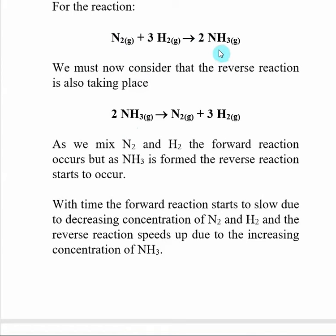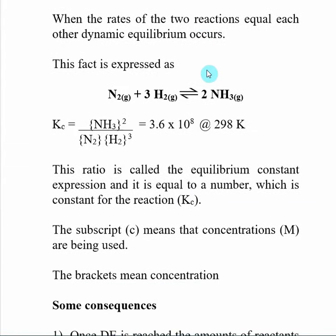We need to have a way of recognizing that our reaction is an equilibrium type of reaction, and they do that by using this double-headed arrow here. That means there is a forward and reverse reaction going on. We still write a reactant and a product, but that's not 100% true — both reactions are going on, and I could have just as easily reversed this reaction.